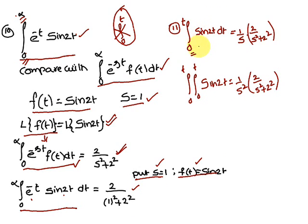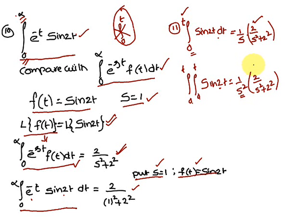Similarly, for ∫[0 to t] sin(2t) dt, find Laplace of sin(2t) and multiply by 1/s. For a double integral ∫∫[0 to t] sin(2t), multiply by 1/s².